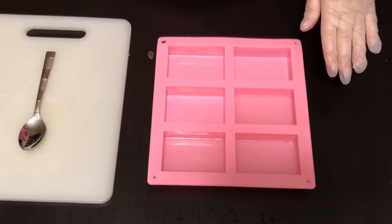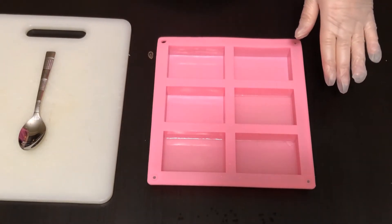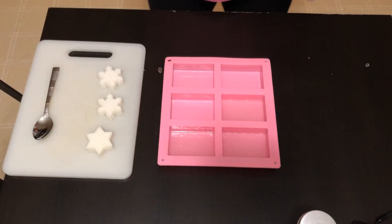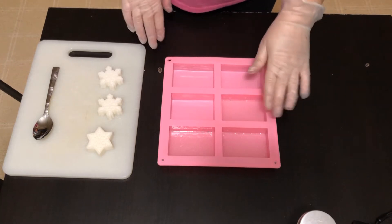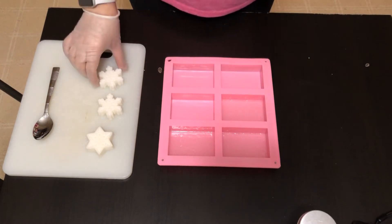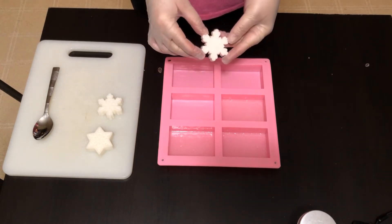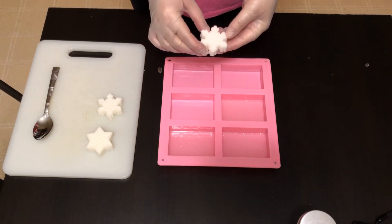So we're going to let that set up for a minute and then we'll add our snowflakes. Okay, so we've let these set up and I've sprayed the top with some more rubbing alcohol. So now we're going to take our snowflakes and put those in the mold.